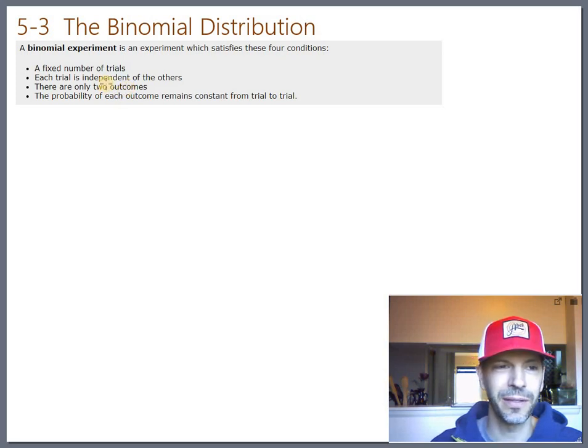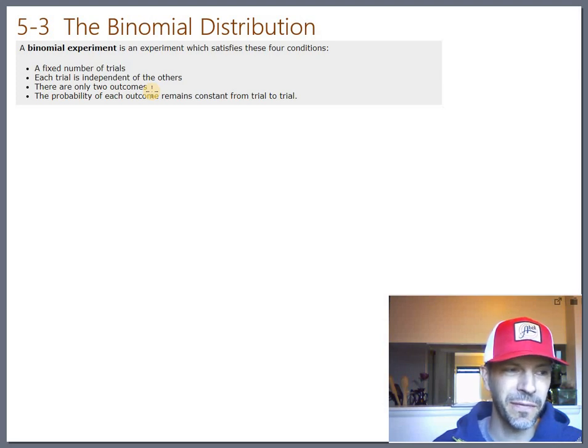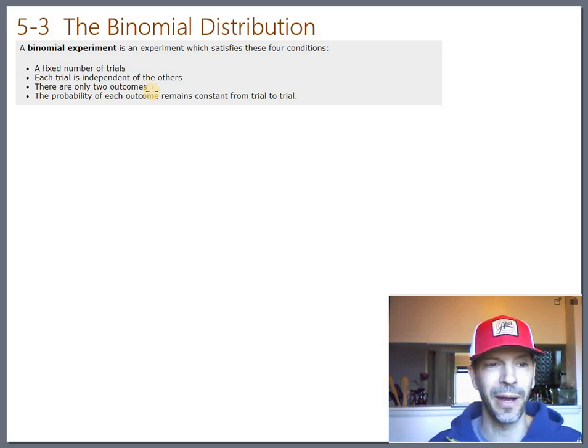The third requirement is that there are only two outcomes. That's where the bi in binomial comes from. It's just saying only two things can happen. And a lot of times we call those two things success or failure. So you can say get a heads on a coin. That's one out of two things. But you can also say draw an ace of spades out of a deck of cards. There's 52 different cards, but when you define your experiment that way, you either draw the ace of spades or you don't. So there's really only two outcomes there.